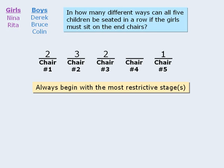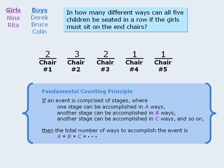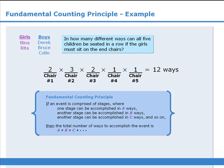Finally, we're left with chair number four. We've already seated four children, so only one child remains — there is only one way to accomplish the stage of seating a child in chair number four. Now that we have determined the number of ways to accomplish each individual stage, we apply the fundamental counting principle and find the product of these individual stages to get 12. So there are 12 different ways in which we can seat all five children in a row.